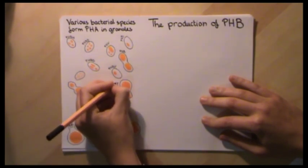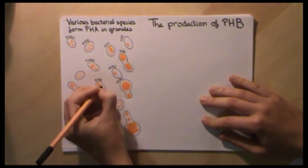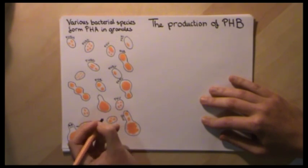PHB is also the most common and best characterized form of PHA stored by bacteria.